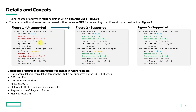In this section, we'll cover the details and caveats for the feature. One key caveat is that tunnel source IP addresses must be unique within different VRFs. In figure one, source IP 1.1.1.1 is used for both blue and orange VRFs — this isn't supported because the transport VRF is the same for both. In figure two, VRF blue and VRF orange each have a different source IP. Figure three shows that when using the same VRF with different tunnel destination IPs, the same source IP can be reused within the transport VRF.